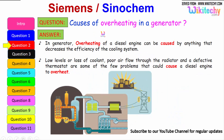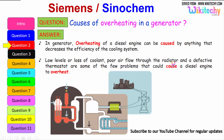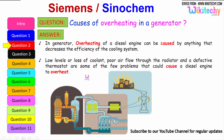Let us move on to the next question: causes of overheating in a generator. Overheating of a diesel engine can be caused by anything that decreases the efficiency of the cooling system. It can be due to the loss of coolant or low levels of coolant, poor airflow through the radiators, and a defective thermostat — some of the problems that could cause a diesel engine or generator to overheat.